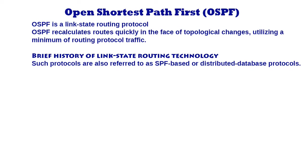Brief History of Link State Routing Technology. OSPF is a link state routing protocol. Such protocols are also referred to as SPF-based or distributed database protocols. The first link state routing protocol was developed for use in the ARPANET packet switching network, forming the starting point for all other link state protocols. The homogeneous ARPANET environment — single vendor packet switches connected by synchronous serial lines — simplified the design and implementation of the original protocol.